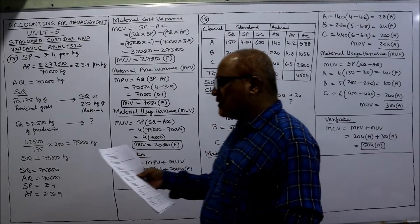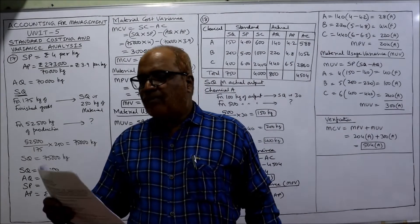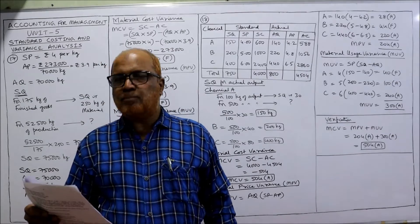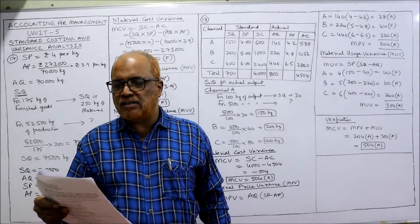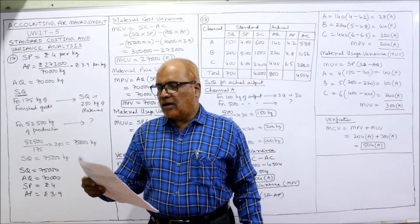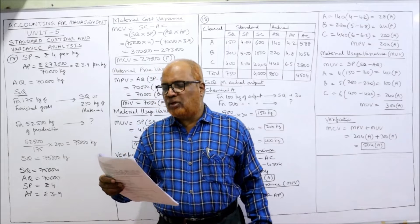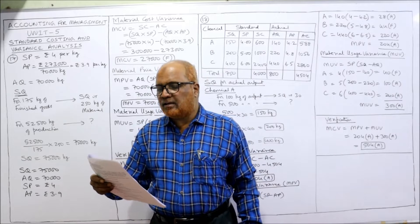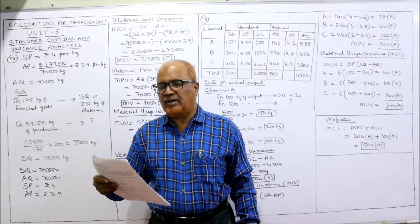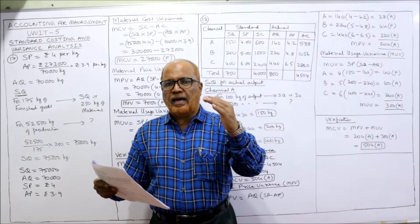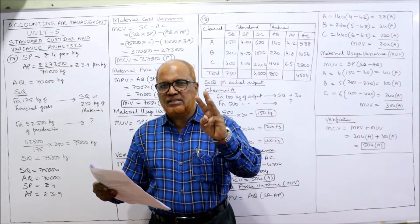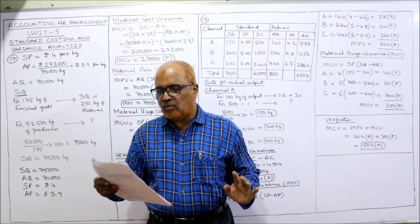Now the 17th problem. From the given data, calculate material price variance (MPV), material usage variance (MUV), and material cost variance (MCV). These three variances we have to calculate.